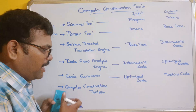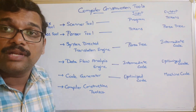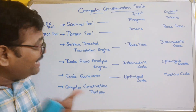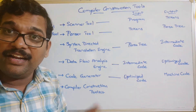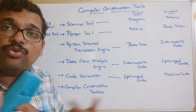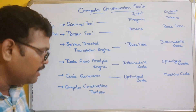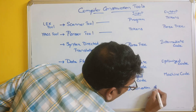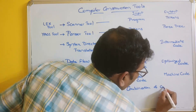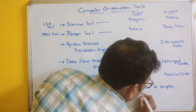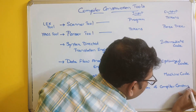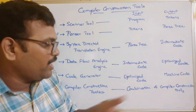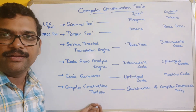The last one is the compiler construction toolkit. The name itself indicates it is a toolkit — it is a combination of these tools. It is an integration and combination of all the above tools. It may be integrated with one or two tools, or two or three tools, or more. So if we combine one or more tools together we can call it a toolkit.